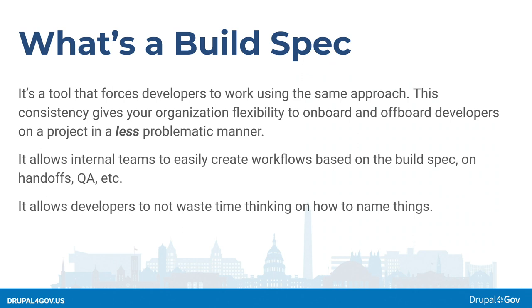It's not a magical silver bullet, but it helps. It allows internal teams to easily create workflows, and it allows developers to not waste time thinking about how to name things. Naming things is hard. Developers spend a lot of time just thinking how they're going to name a component. If you have two developers working on two different parts of the site and naming isn't defined, one might call something "grid columns" while another calls it "event listing" — one is very general, one is very specific. Having one consistent naming approach creates a better admin experience for the client.